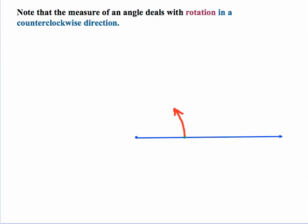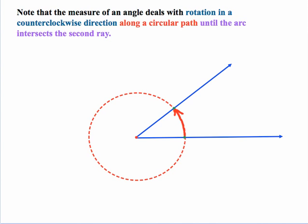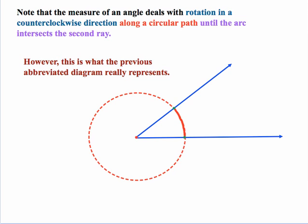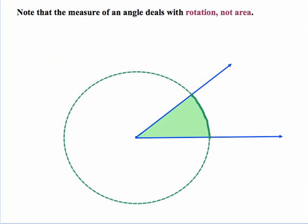Note that the measure of an angle deals with rotation in a counter-clockwise direction along a circular path until the arc intersects the second ray. And the end result is usually designated in this manner where you're going to have your angle and you're going to have an arc that's marked off. But it's important that the kids realize that this is actually what that previous abbreviated diagram represents. It's not just this, it's actually this amount of rotation along this circle.